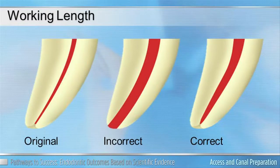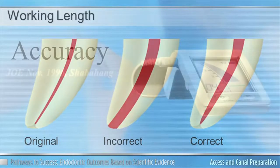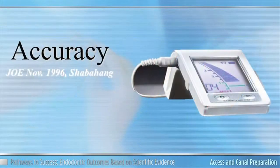However, we have to remember that the only way we can determine our CDJ's position is truly histological. But research has shown that using an apex locator, we can actually determine it with 96% accuracy.